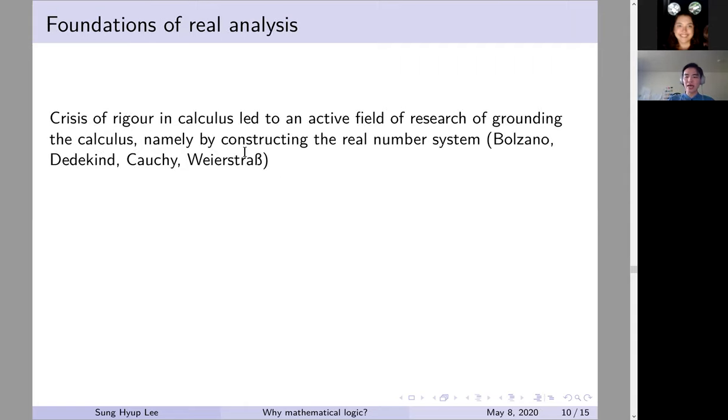So now we have the 18th and 19th century project of trying to ground the real number system or calculus, for that matter. The philosophical objections that Newton's and Leibniz's calculus were fairly unrigorous and not grounded led to an active field of research at the time, led by people like Bolzano, Dedekind, Cauchy, Weierstrass, and I'll just mention two of these.